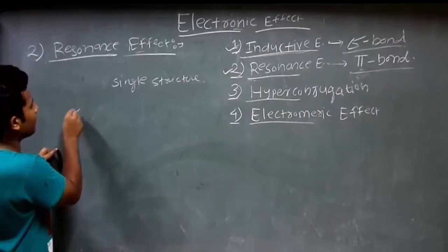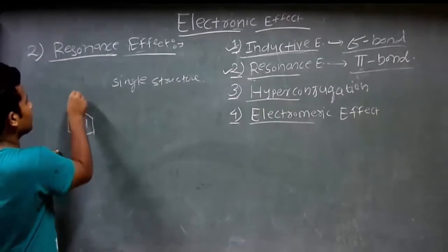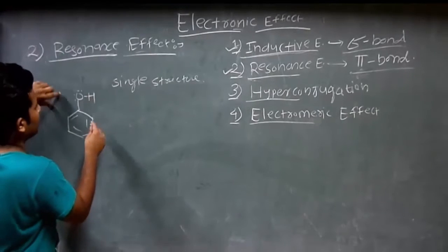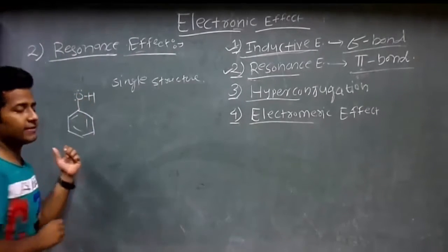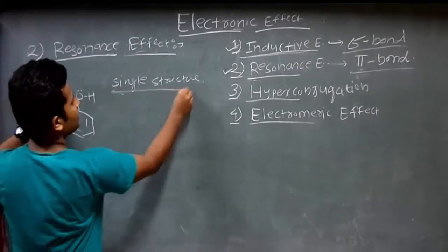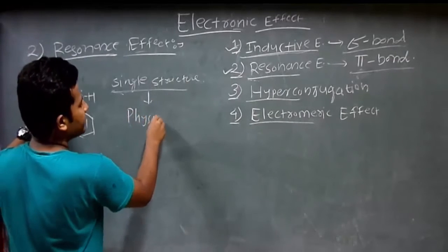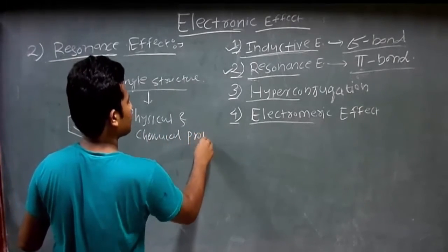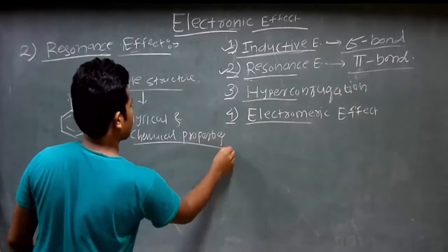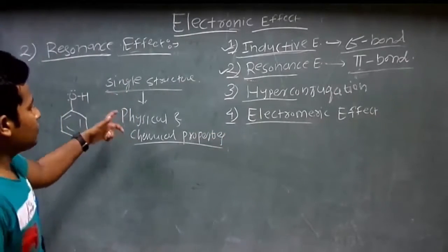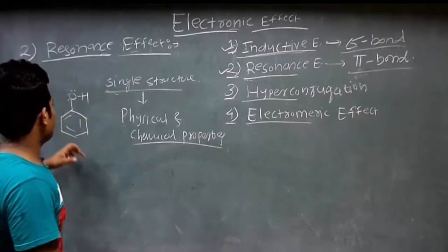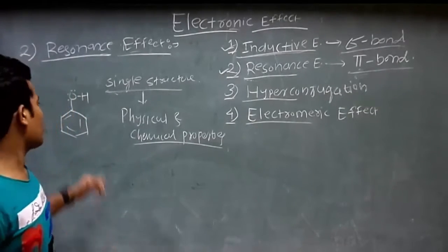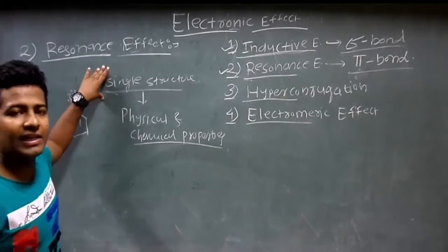For example, consider phenol. This is the single structure of phenol. This single structure could not explain all physical and chemical properties. That's why, to understand all the physical and chemical properties, there is a need to develop two or more structures of one compound. That's why there is a need to develop resonance.